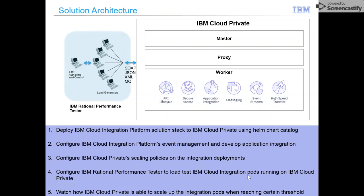IBM Cloud Integration Platform is the container-ready version of IBM Middleware Stack that includes IBM API Connect, IBM App Connect Enterprise or the Enterprise Service Bus, IBM MQ, and IBM Event Streams.